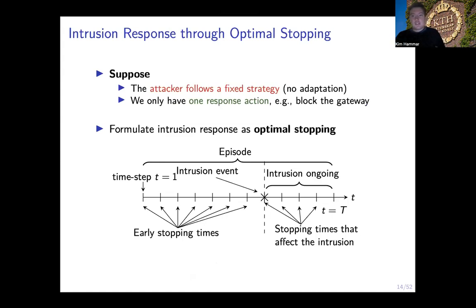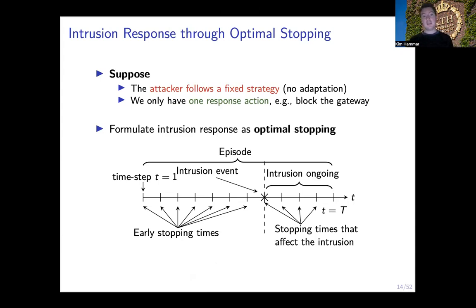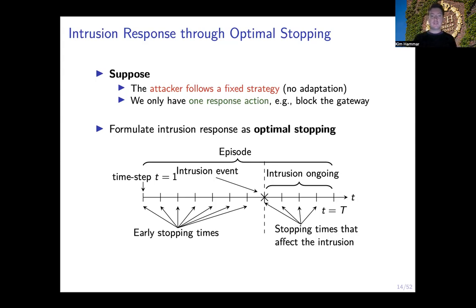This is a bit orthogonal to most of the related work in this space, where everyone likes to do modeling but very few actually go through the effort to validate it on a real system. I will start from a very simple model and then show how we can gradually increase the sophistication. As a starting point, suppose the attacker follows a fixed strategy and the defender has only a single response — namely blocking the gateway. In this case, the problem of intrusion response becomes a problem of optimal stopping.